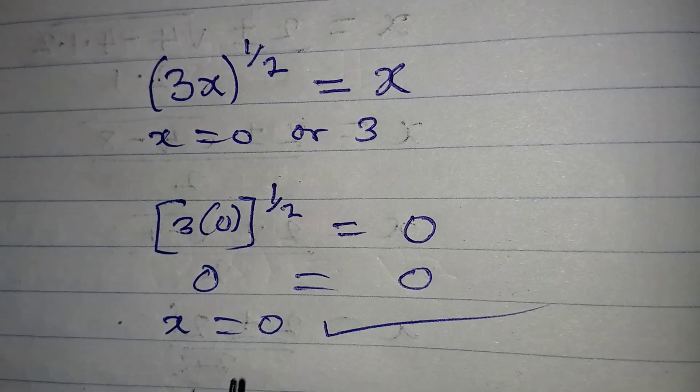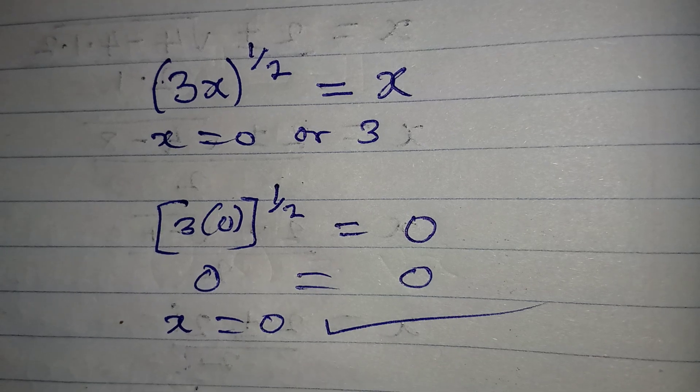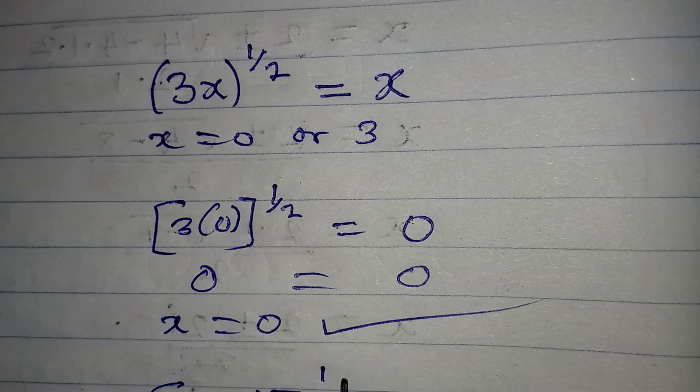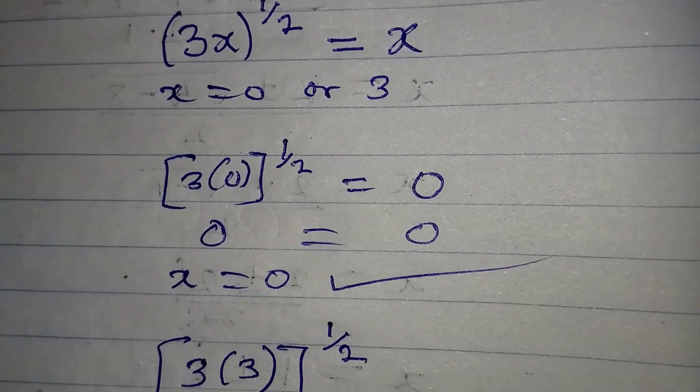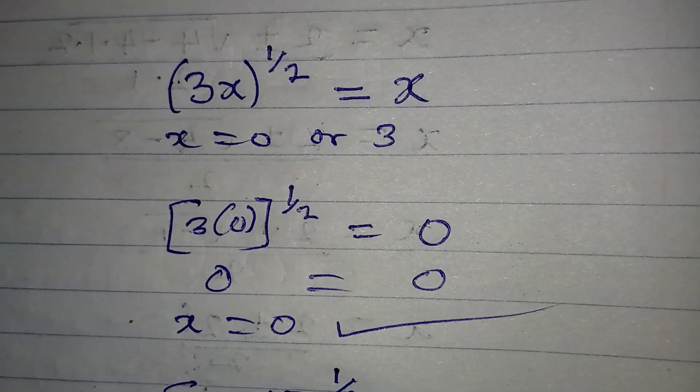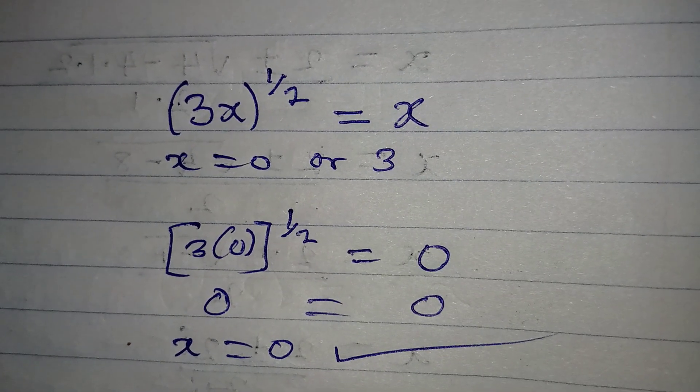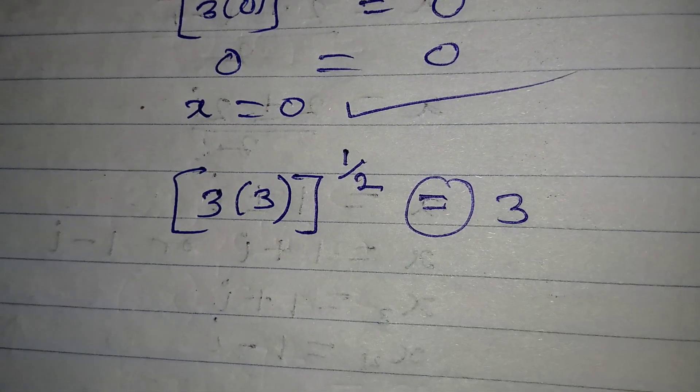Then if I put in the value of x as 3, then I'm going to have 3 multiplied by 3. Now the whole of this is raised to the power of 1/2, and then on the right hand side we are supposed to have x, and x now is 3.